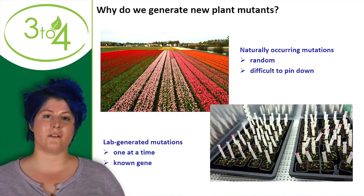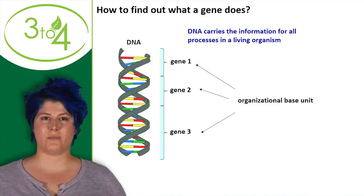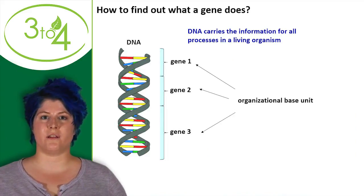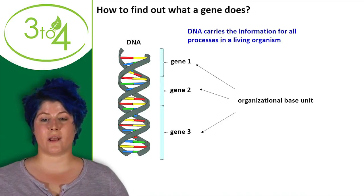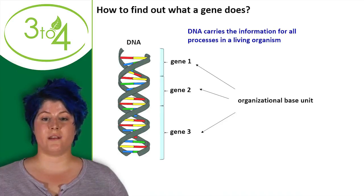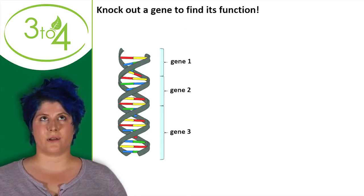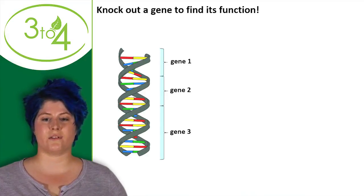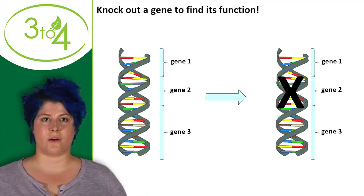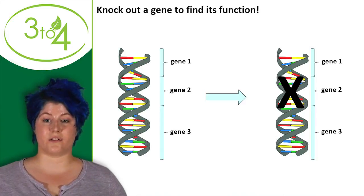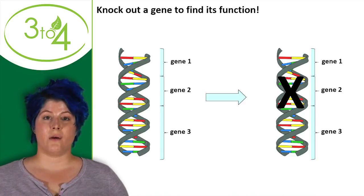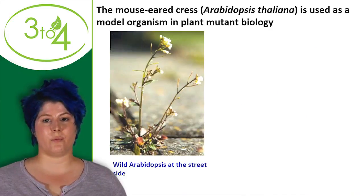As you may remember from school, DNA is the carrier of all information in the living cell, and a gene is the basic organizational unit of that. A common process in plant biology is to take a gene and knock it out. When we find a so-called knockout mutant, we can work with it to discover what that gene does. In my lab we work with this approach.